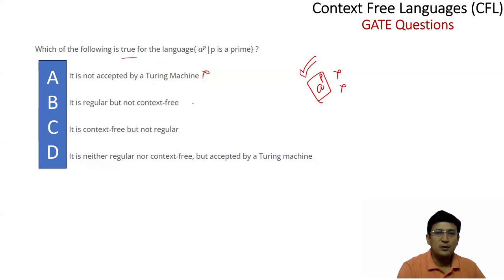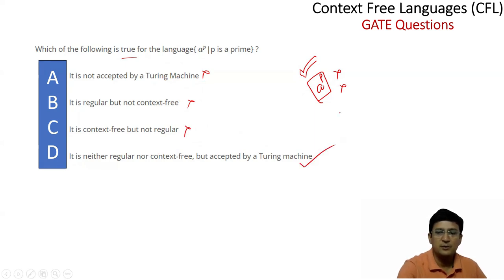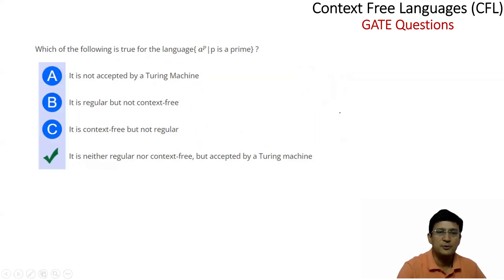Option: it is regular but not context-free — this is also wrong because this language is neither regular nor context-free. Option: it is context-free but not regular — this is also wrong. So the correct answer is: it is neither regular nor context-free, but it is accepted by the Turing machine. This is the only correct option.